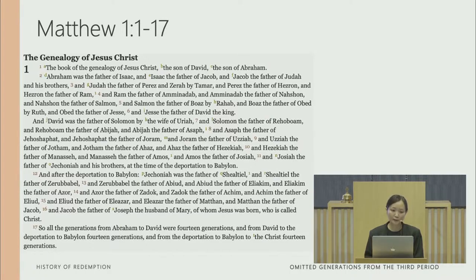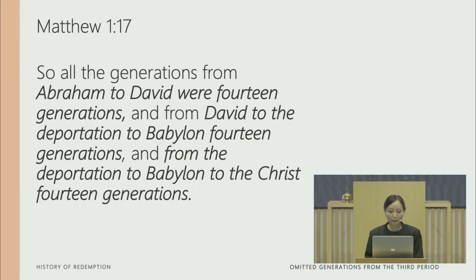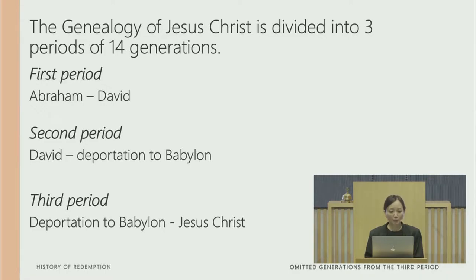In Matthew chapter 1, verses 1 to 17, we can see in verse 17: all the generations from Abraham to David were 14 generations, from David to the deportation to Babylon, 14 generations, and from the deportation to Babylon to the Christ, 14 generations. The genealogy of Jesus Christ is divided into three periods of 14 generations. The first period is from Abraham to David, the second from David to the deportation to Babylon, and the third from the deportation to Babylon to Jesus Christ.